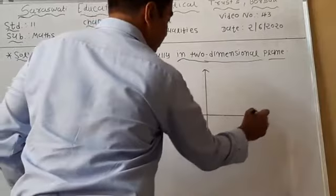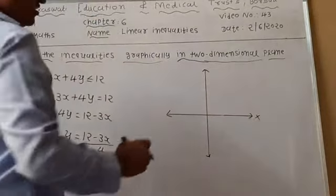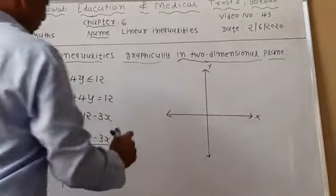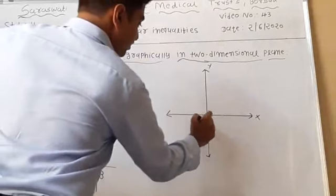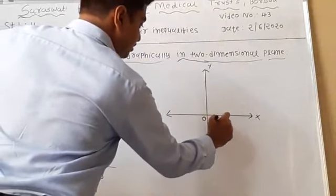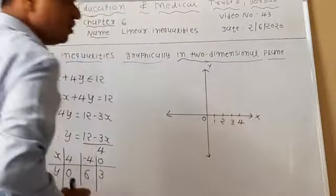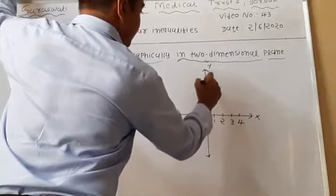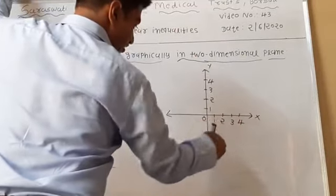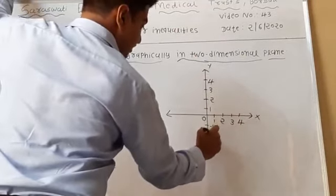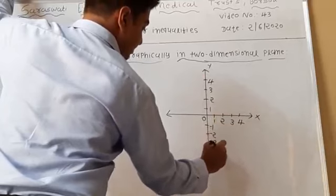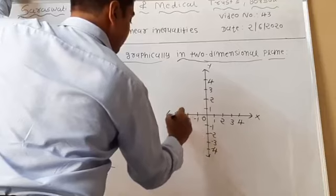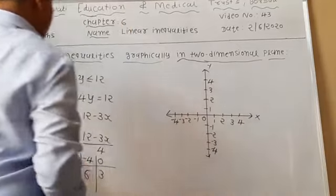Now draw the coordinate plane. Write x-axis and y-axis. On the x-axis mark values: 0, 1, 2, 3, 4 and on the negative side minus 1, minus 2, minus 3, minus 4. On the y-axis mark 1, 2, 3, 4 in the upper side and minus 1, minus 2, minus 3, minus 4 in the lower side.